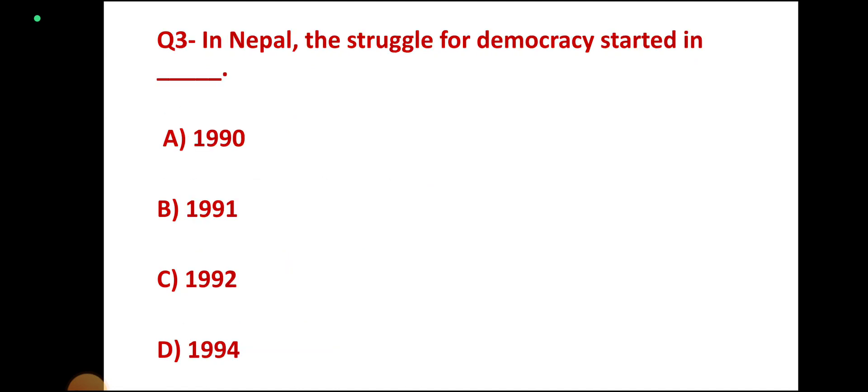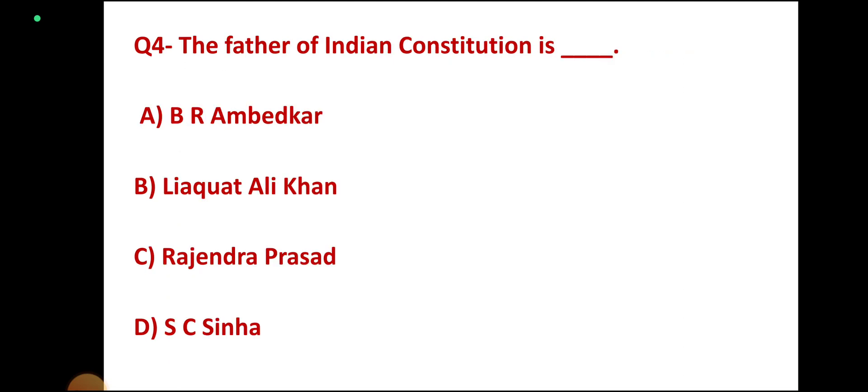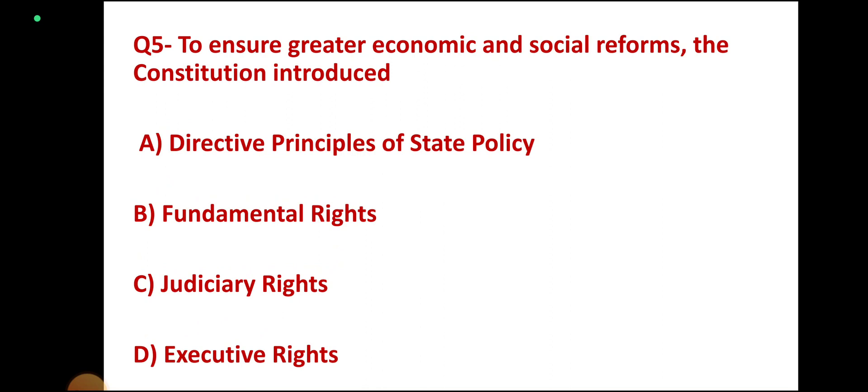Question number 3. The struggle for democracy in Nepal started in which year? Options: 1990, 1991, 1992, 1994. Correct answer: Option A, 1990. Question number 4. The father of the Indian Constitution is? Options: Dr. B.R. Ambedkar, Leah Kattali Khan, Rajinder Prasad, S.C. Sinha. Correct answer: Dr. B.R. Ambedkar.